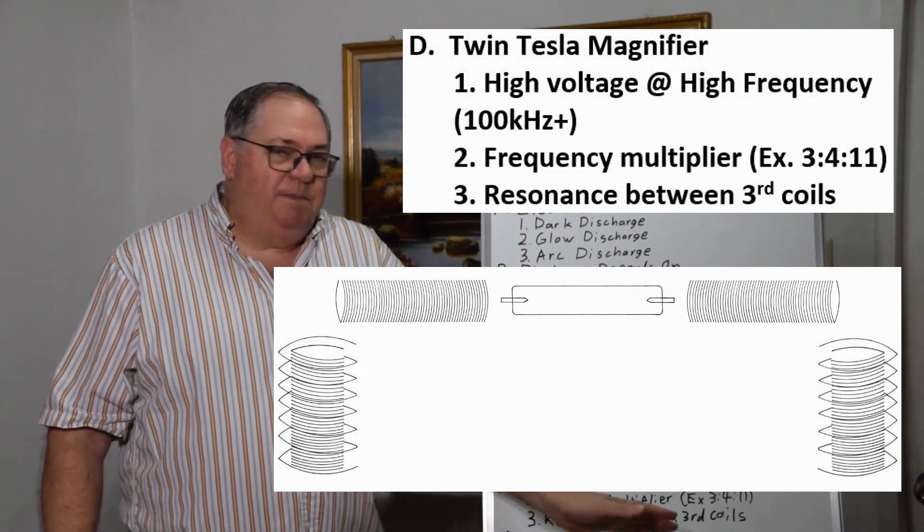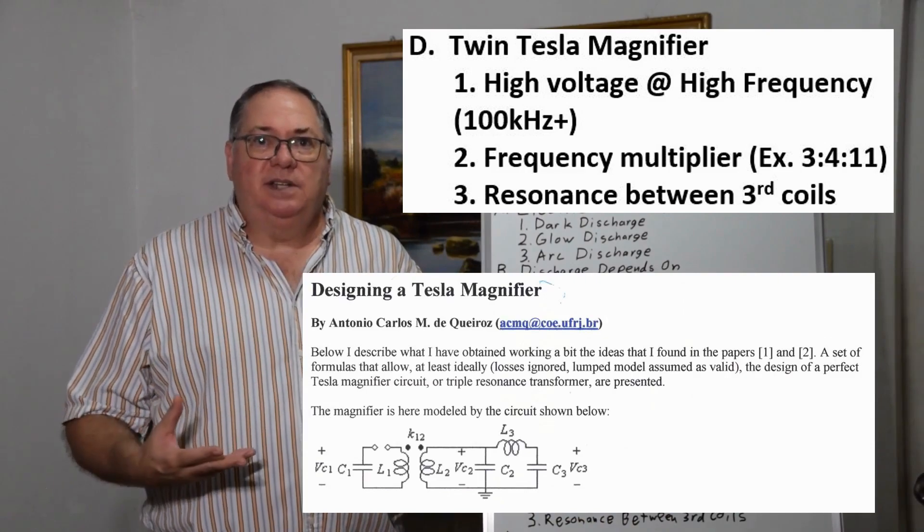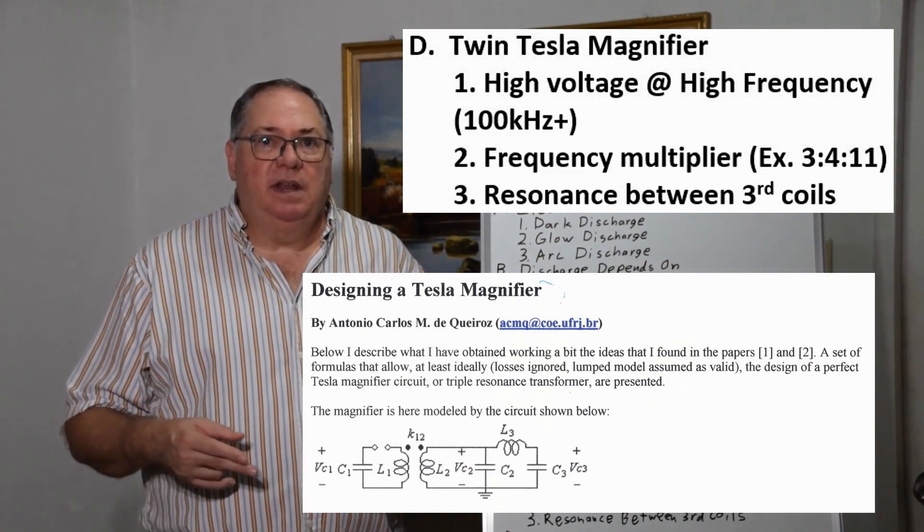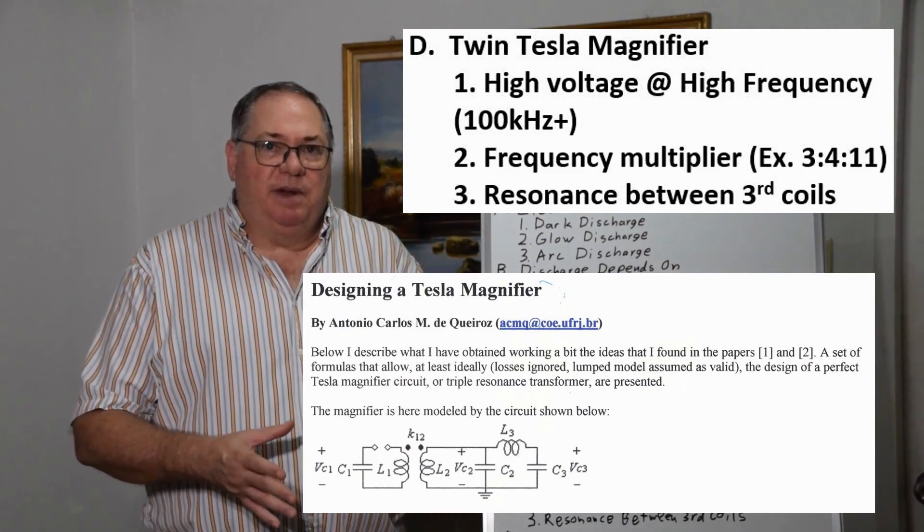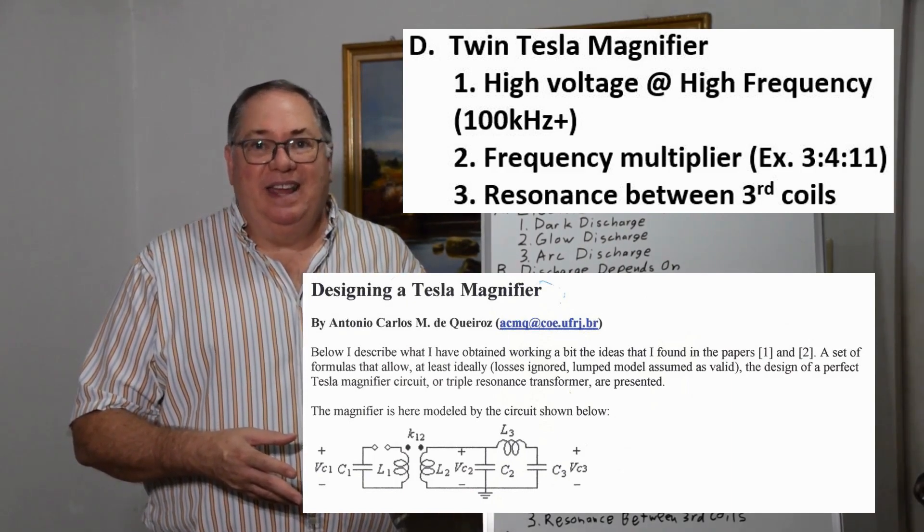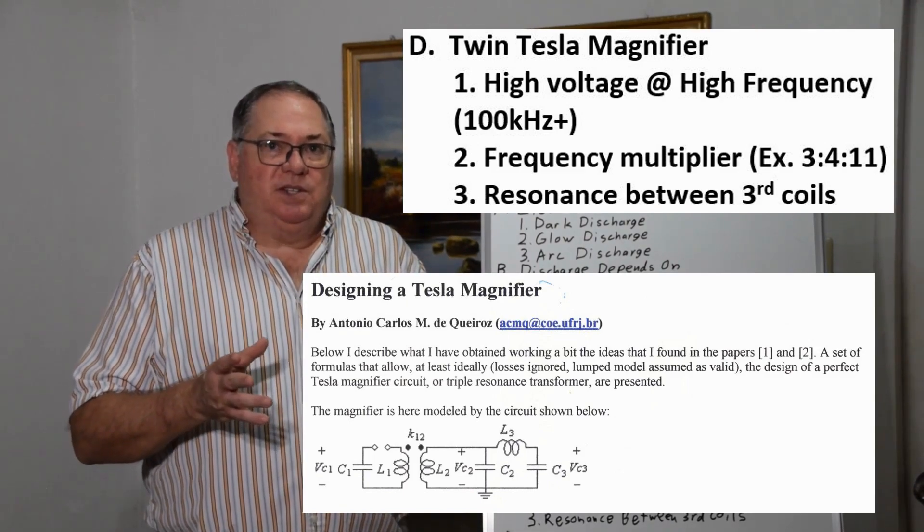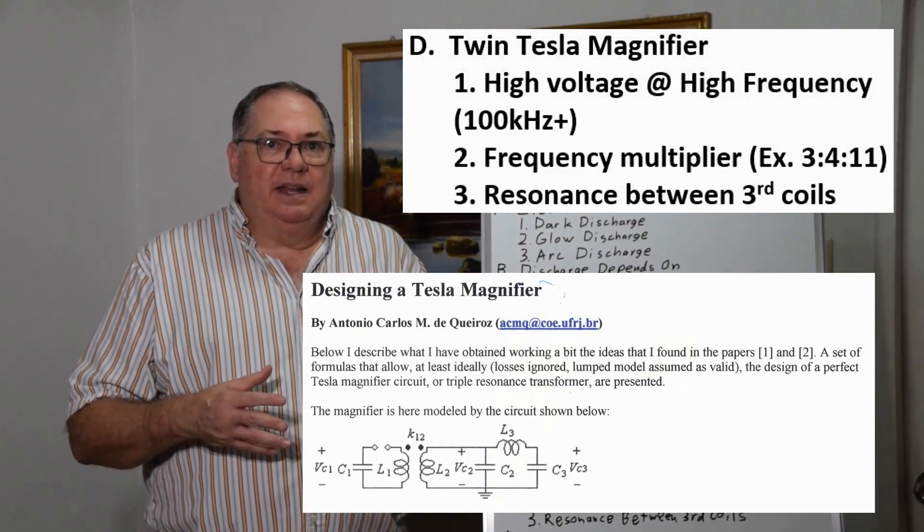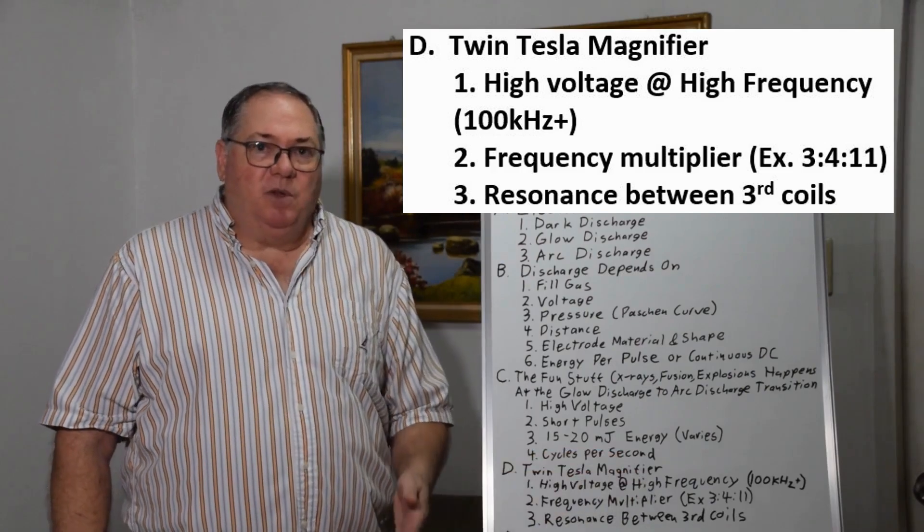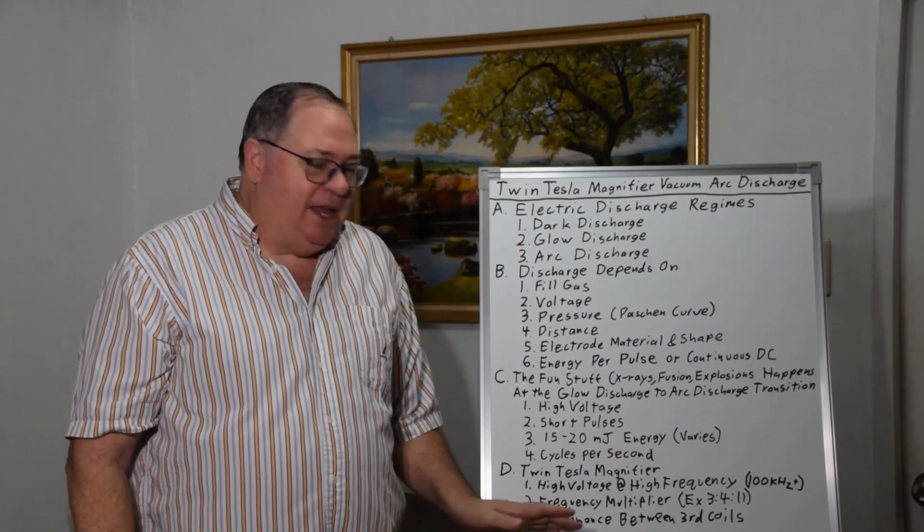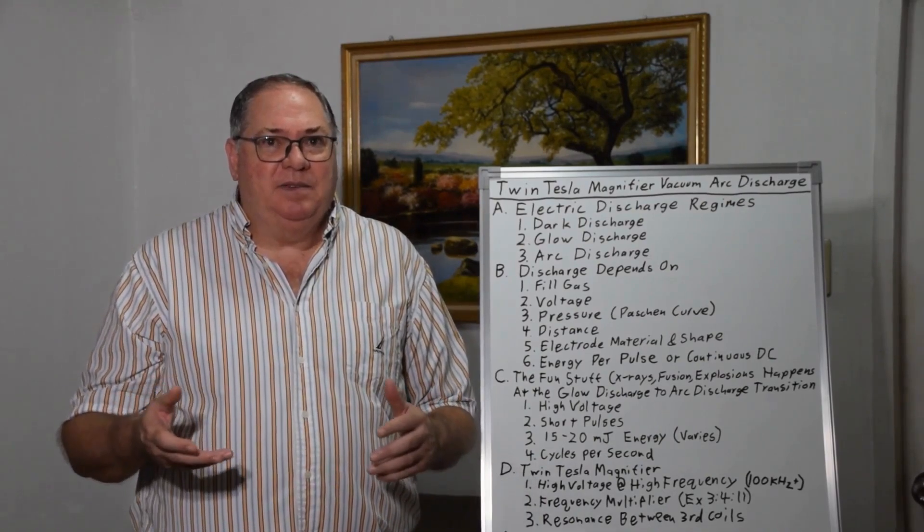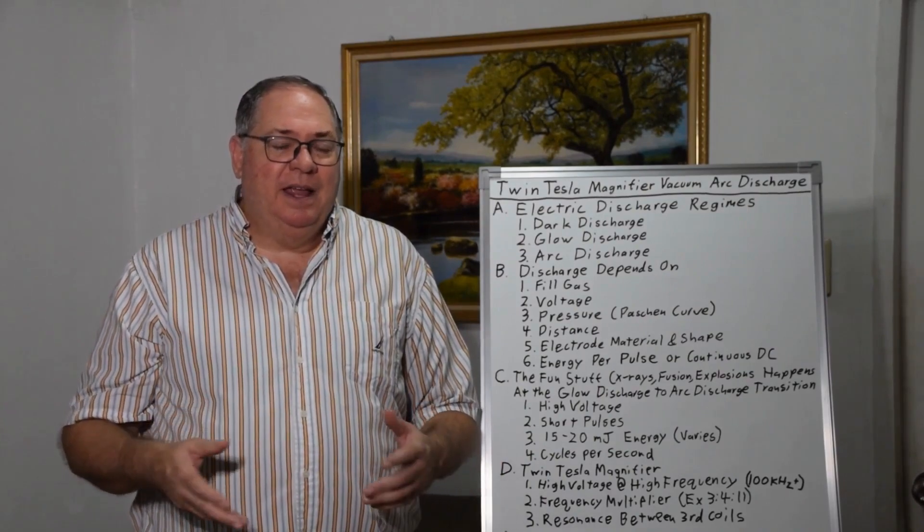You can set up a twin Tesla magnifier with different resonant frequencies. I wanted a 3-4-11 ratio where the primary has frequency factor of 3, secondary factor of 4, and third coil factor of 11. Because it's ringing every half wave, I could get 7 arcs per cycle of the primary, multiplying into hundreds of thousands.